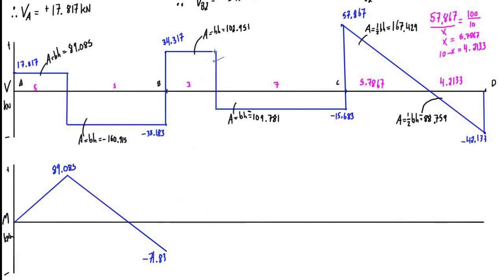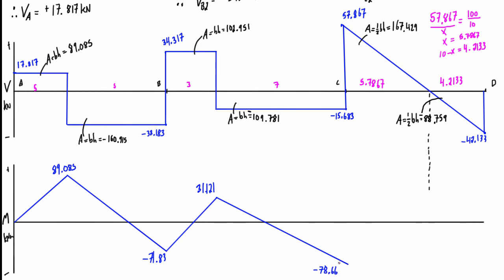Adding the next positive area of 102.951 to negative 71.83 gives 31.121. Then 31.121 minus 109.781 brings us to negative 78.66. In the distributed load region there's a parabolic shape peaking at the zero-shear intercept: negative 78.66 plus 167.429 gives a peak of 88.769. Subtracting the final negative area of 88.759 brings us back to essentially zero — the small 0.01 difference is just rounding error.